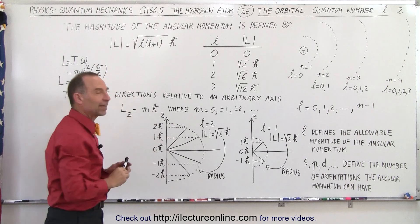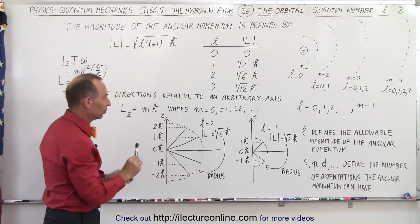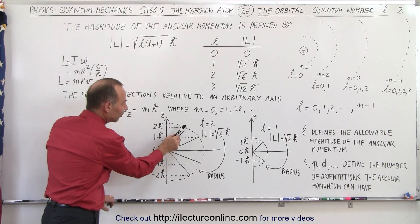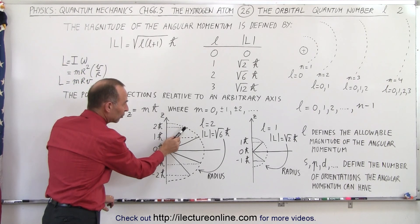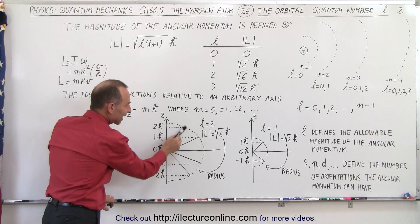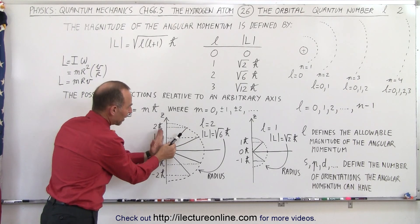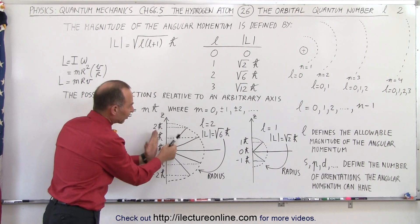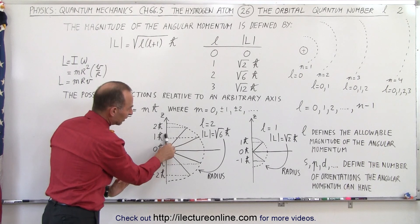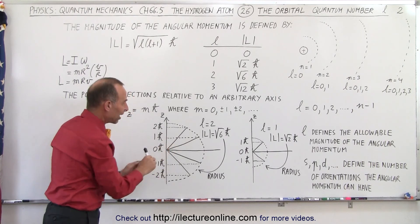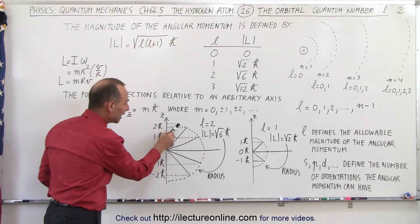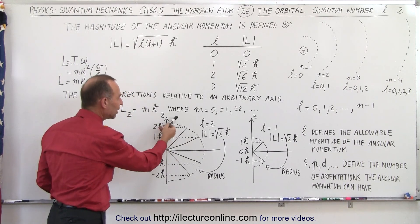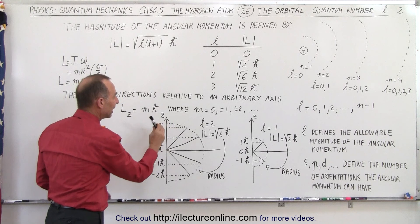The angular momentum itself is not determined by knowing the exact direction — it's determined by the angle relative to the z-axis. We can calculate all these various angles, but then it can actually point in any direction relative to that angle.